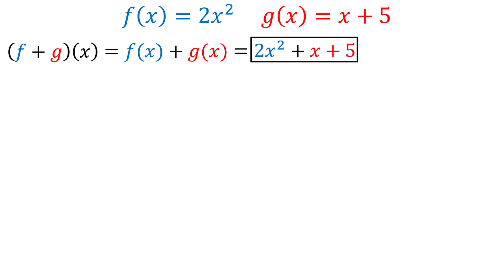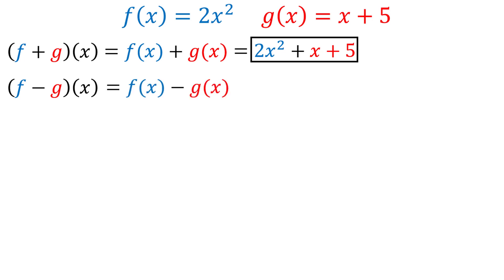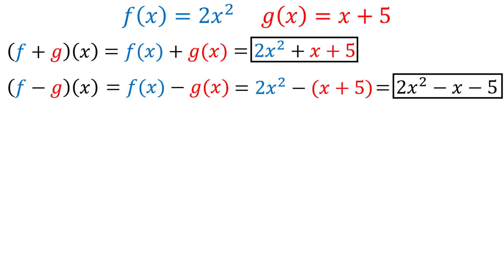If we wanted to subtract function g from function f, that would be represented by f minus g of x, which is the same thing as f(x) minus g(x). In our example, this is equal to 2x² minus (x + 5). We need to use parentheses as we are subtracting the entire function g(x), giving us 2x² − x − 5 as our answer.